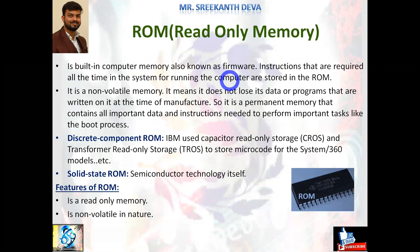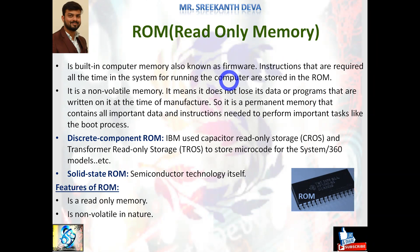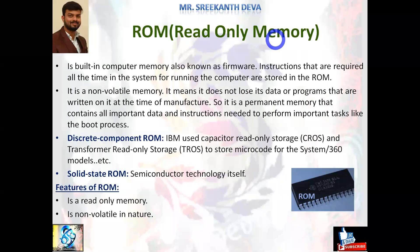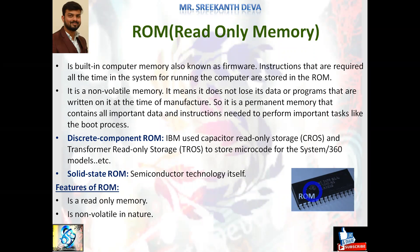Next type of main memory — primary memory — is called ROM, which stands for Read-Only Memory. ROM is a built-in computer memory also known as firmware. Firmware is a combination of hardware and software. Instructions required all the time for running the computer are stored in ROM. Simply remember: ROM stores those instructions which are required to start a computer. This operation is referred to as bootstrapping.